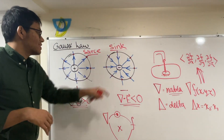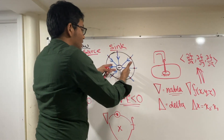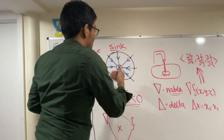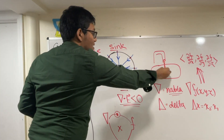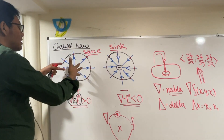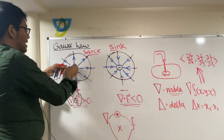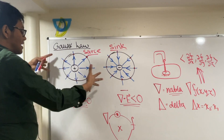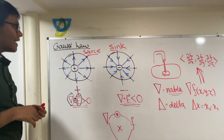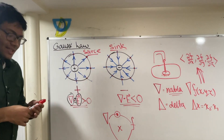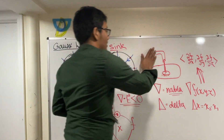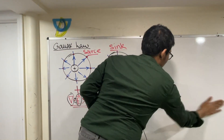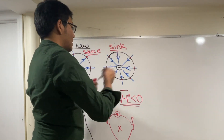Here you have a source — the electric field lines are acting as if they're coming from a source, as if the positive charge is like a source emitting field lines outwards. Here you have a sink — the electric field lines are like water pouring into the sink.